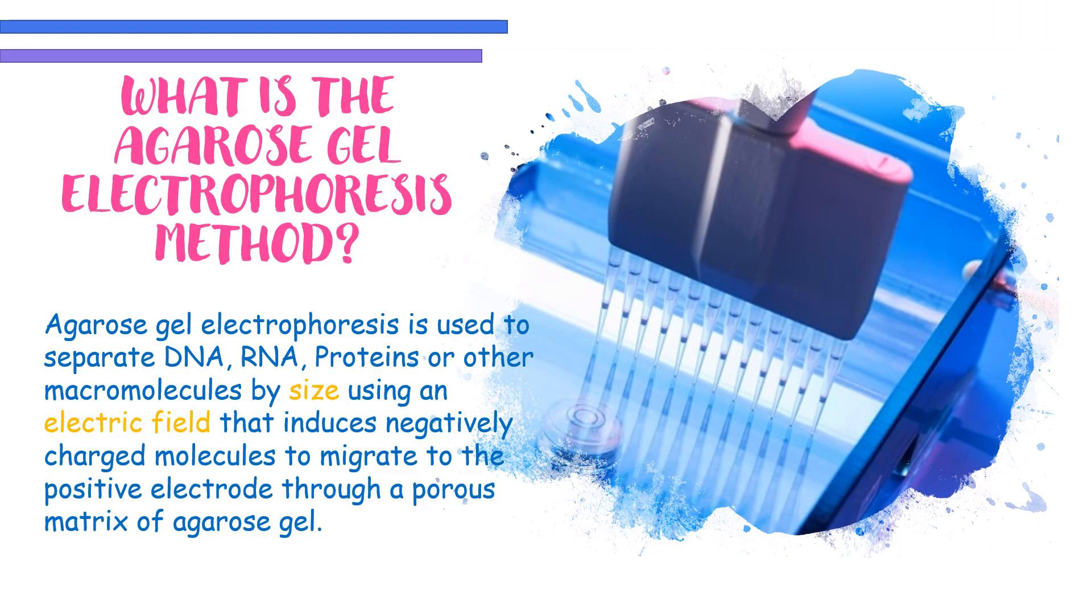What is the agarose gel electrophoresis method? Agarose gel electrophoresis is used to separate DNA, RNA, proteins or other macromolecules by size using an electric field that induces negatively charged molecules to migrate to the positive electrode through a porous matrix of agarose gel.